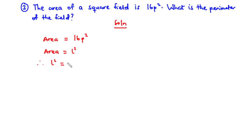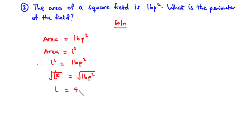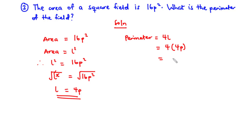Taking the square root of both sides: L equals the square root of 16p squared. The square root of 16 is 4 and the square root of p squared is p, so L equals 4p. The perimeter of the square is 4L equals 4 times 4p equals 16p. So the perimeter of the square field is 16p.